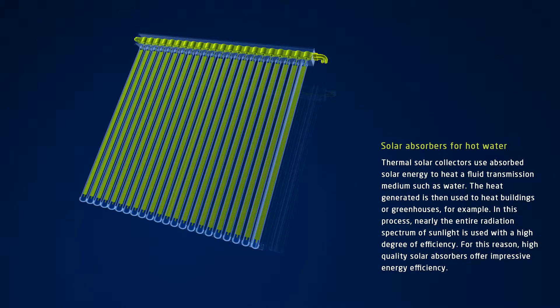In solar collectors, solar energy is used to heat a fluid transmission medium, such as water. Then the heat is used to heat buildings or greenhouses, for example, to a temperature that is exactly right.